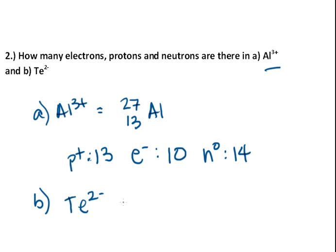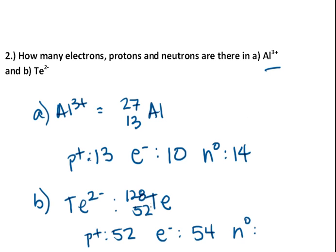What about tellurium 2 minus? Well, neutral tellurium is 128 and 52. So we must have 52 protons. For electrons, we would normally have 52, but now we have two extra since it's 2 minus. So 52 plus 2 is 54. And finally, the number of neutrons would just be 128 minus 52, which corresponds to 76.